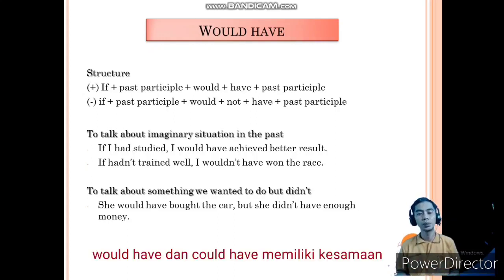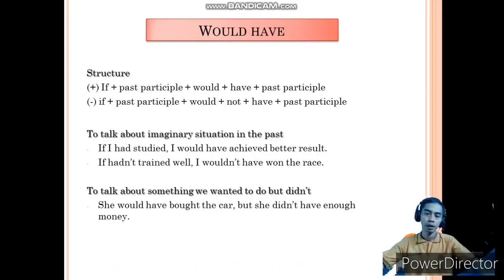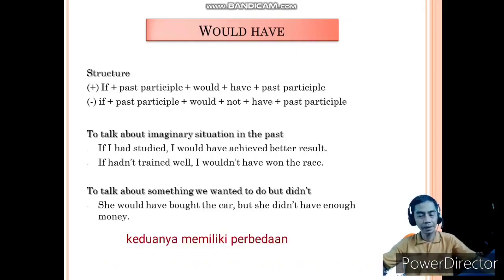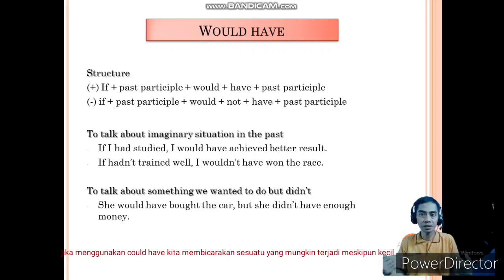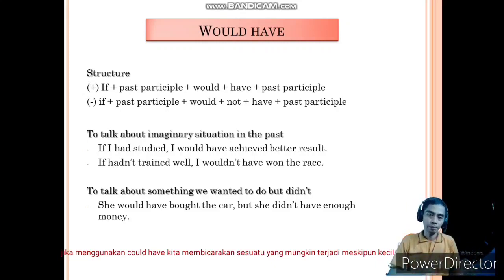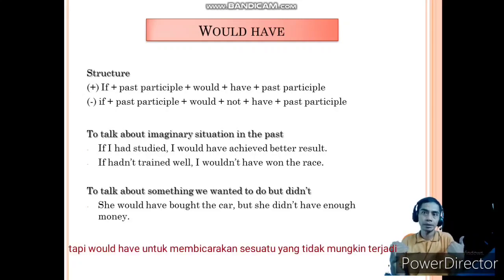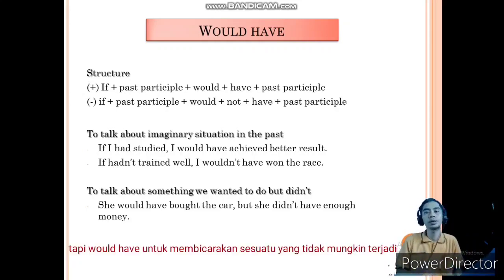Would have and could have have similarities, but they also have differences. If we use could have, it can still be possible to happen. But if we use would have, it is impossible to happen, because when we say it, the activity or condition is already done.